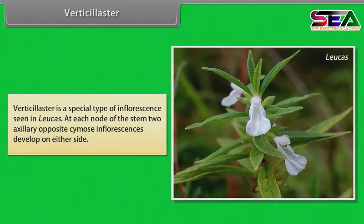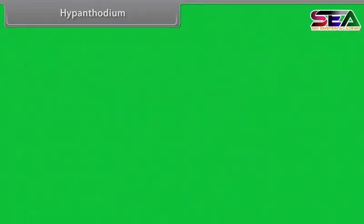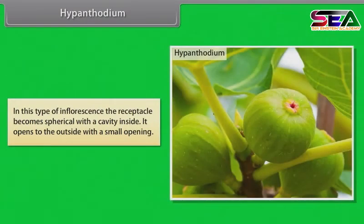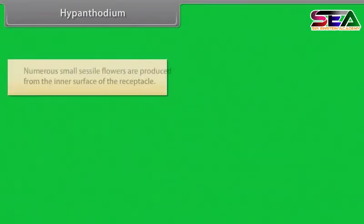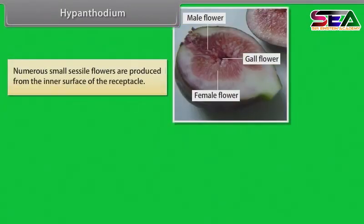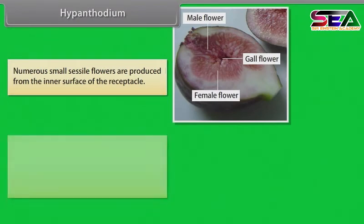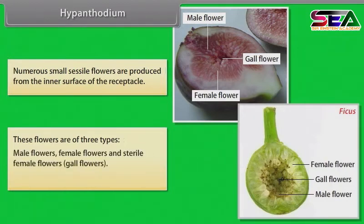Verticillaster is a special type of inflorescence seen in Leucas. At each node of the stem, two axillary opposite cymose inflorescences develop on either side. In hypanthodium, the receptacle becomes spherical with a cavity inside and opens to the outside with a small opening. Numerous small sessile flowers are produced from the inner surface of the receptacle. These flowers are of three types: male flowers, female flowers, and sterile female flowers (gall flowers). Example: Ficus.